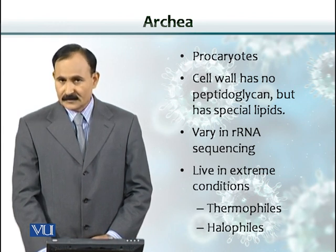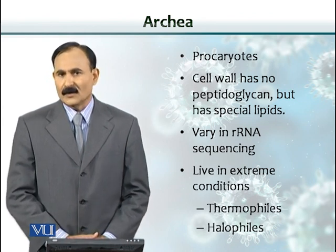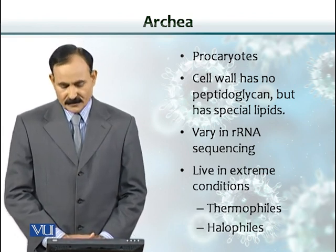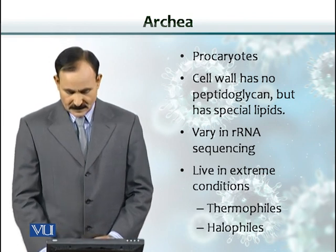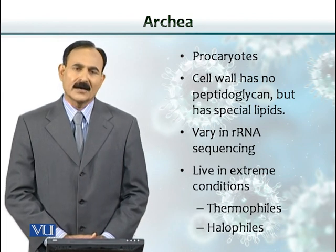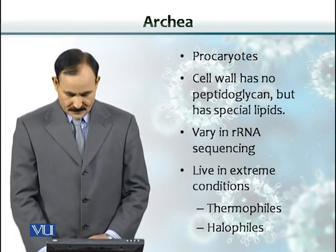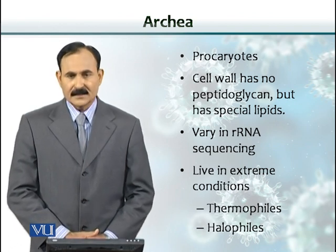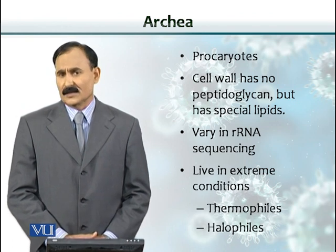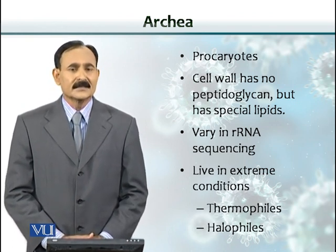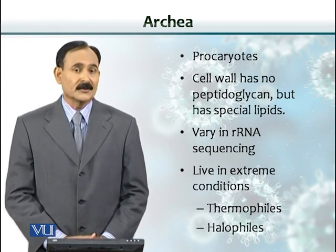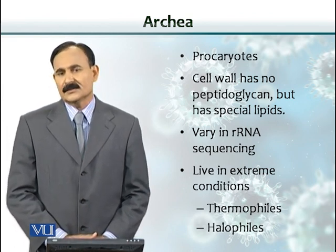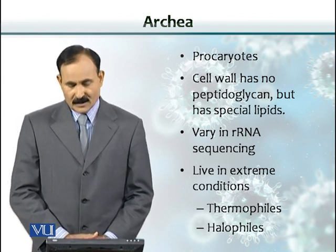Archaea are also prokaryotes and also have a cell wall, but their cell wall does not contain peptidoglycan. Instead, they have special lipids in their cell walls, and they also vary in their ribosomal RNA sequences. Archaea live in extreme conditions, such as hot water at 100 degrees Celsius, and can also survive in very high salt concentrations — those archaea are called halophiles.